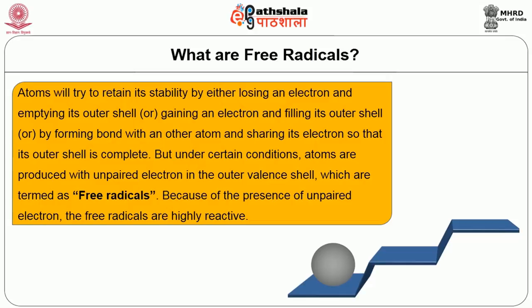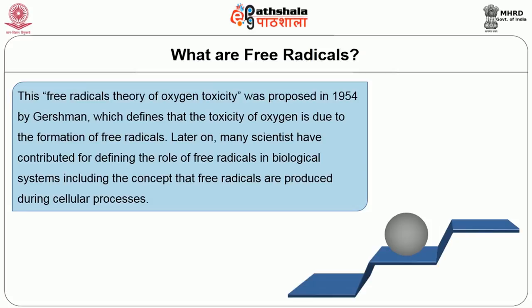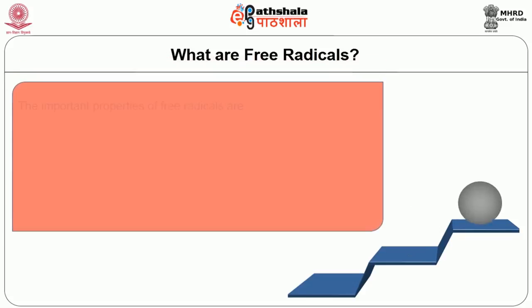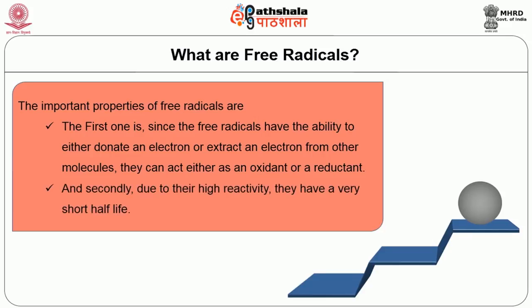Because of the presence of an unpaired electron, free radicals are highly reactive. The free radicals theory of oxygen toxicity was proposed in 1954 by Gersham, which defines that the toxicity of oxygen is due to the formation of free radicals. Later, many scientists contributed to defining the role of free radicals in biological systems, including the concept that free radicals are produced during cellular processes. The important properties of free radicals are: first, since they have the ability to either donate or extract an electron from other molecules, they can act as either an oxidant or a reductant. Second, due to their high reactivity, they have a very short half-life.